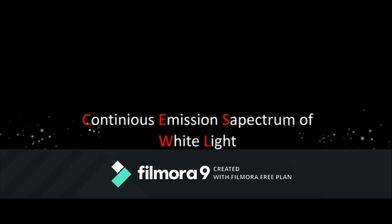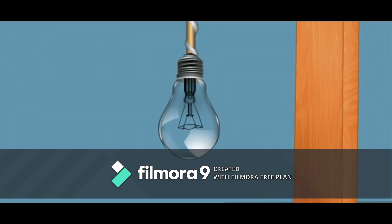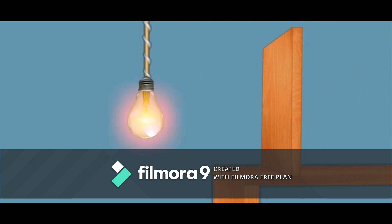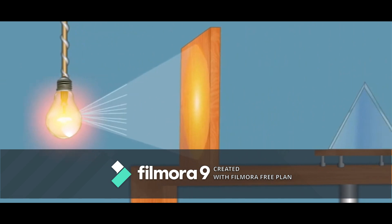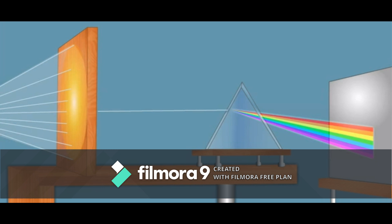This is the continuous emission spectrum of white light. When white light from a source, let's say a bulb, is allowed to pass through a slit, it falls on a prism and scatters itself into seven colors known as the rainbow colors. The splitting of light into a series of color bands is known as dispersion.